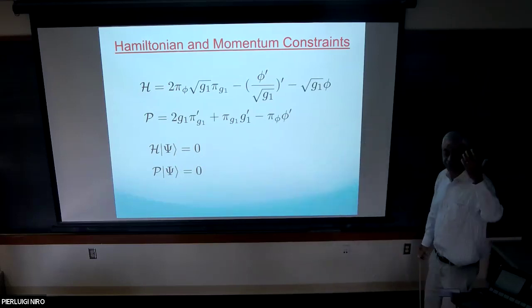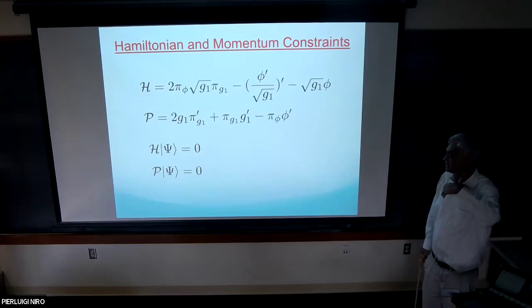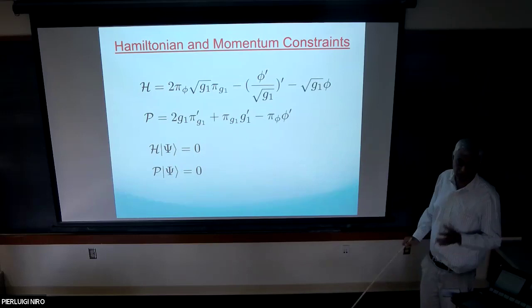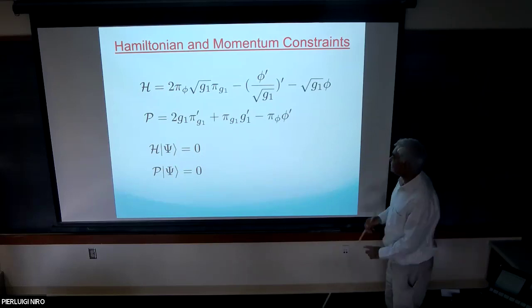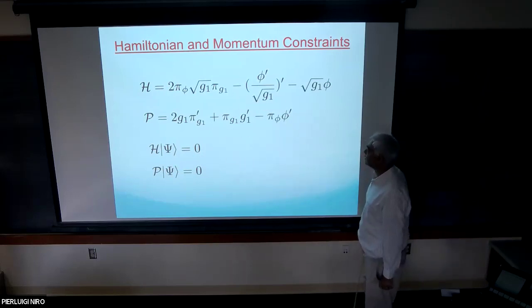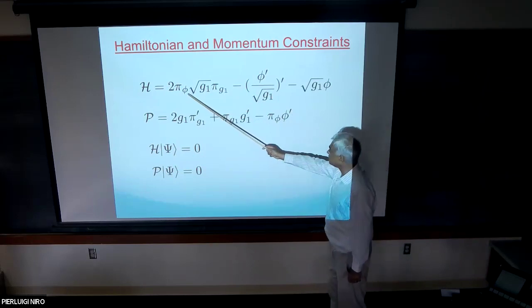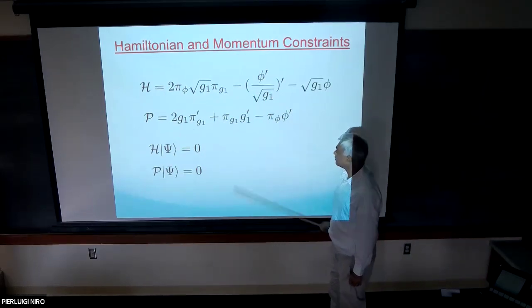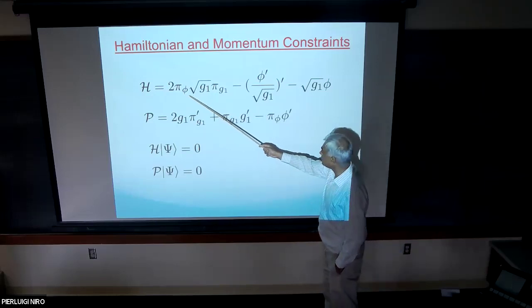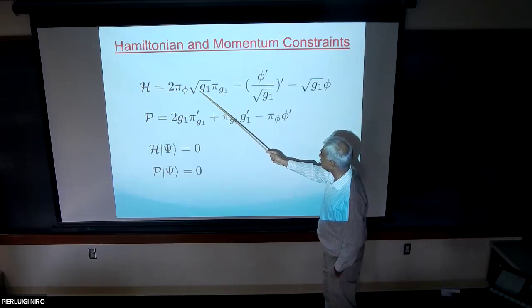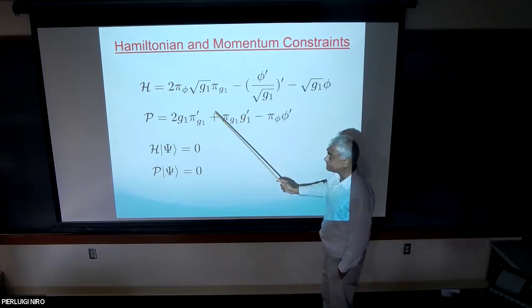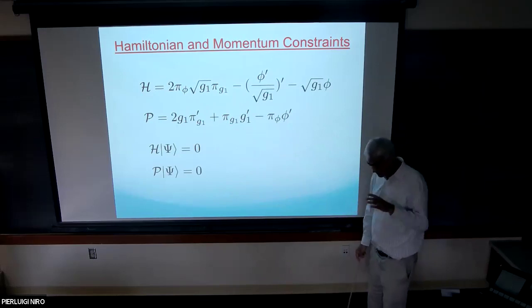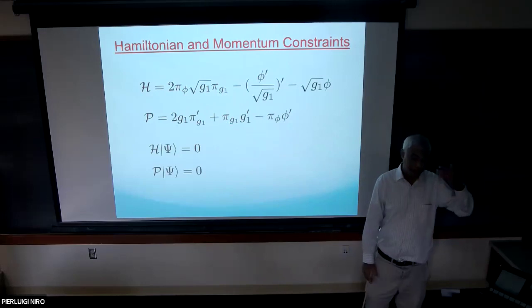We come to the equations of motion for the lapse and shift functions — the Hamiltonian and momentum constraints — and we want to impose that these two constraint operators annihilate all physical states. This is analogous to quantization of gauge theories in A₀ = 0 gauge, where Gauss's law still needs to be imposed on all states. The problem is that these constraints are not well-defined in the quantum theory. For example, in the Hamiltonian constraint — the Wheeler-DeWitt equation — you have g₁, √g₁, and π_{g₁}, but they don't commute, so you have to decide the ordering. This becomes very important at early universe / small dilaton values, though in the semi-classical region (large dilaton) the ordering ambiguities don't matter.